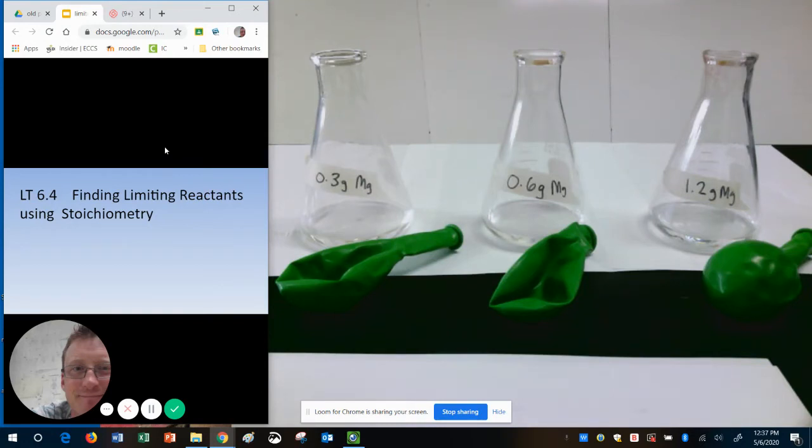Hello everybody. Today I'm going to show you a quick demonstration on limiting reactants. I'm going to show you visually how we can tell if we have limiting reactants and then also show you the math behind some of it. Hopefully by the time we're done you'll see why chemists use stoichiometry in order to actually do some of this stuff.